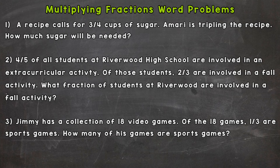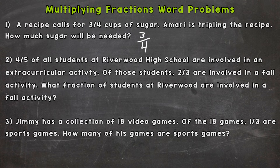Let's jump right into number one, where we have: a recipe calls for three-fourths cups of sugar. Amari is tripling the recipe. How much sugar will be needed? Amari has three-fourths of a cup, and she is tripling, so that means to multiply by three. I'm going to put my whole three over one.